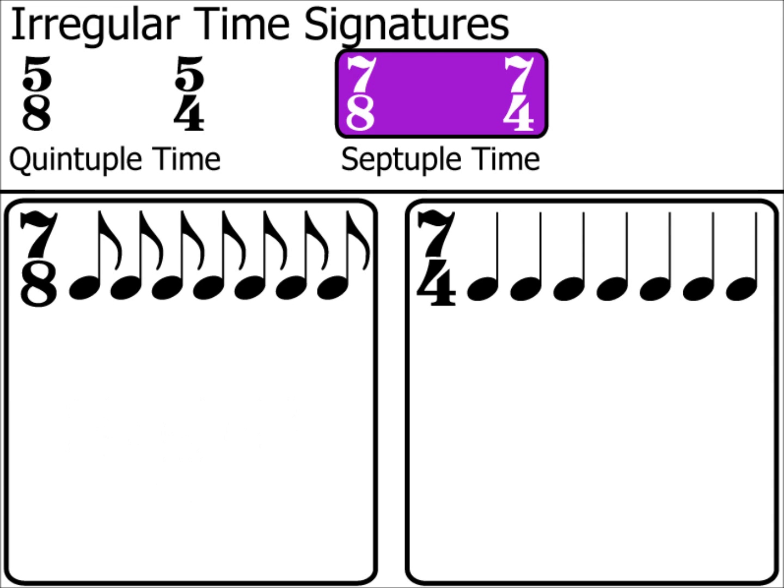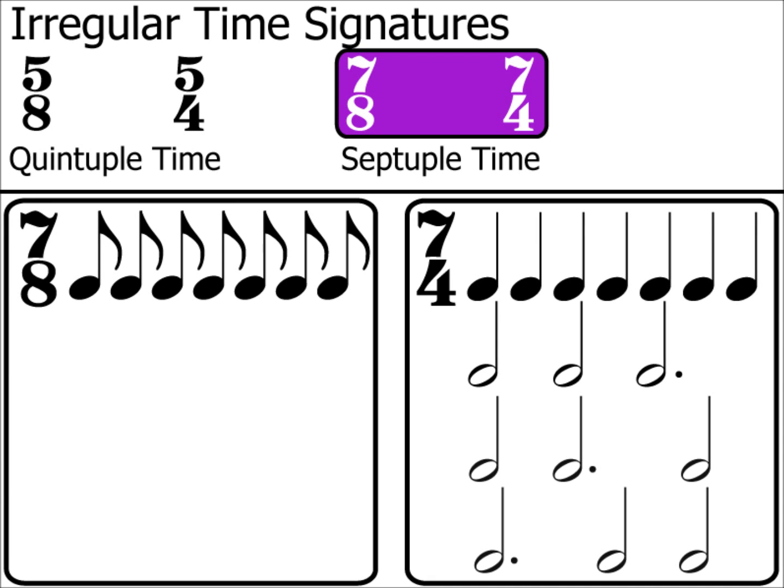Finally, 7/4 has the pulse divided up into minim, minim, dotted minim — or, like 7/8, any order of these pulses.